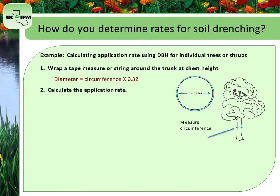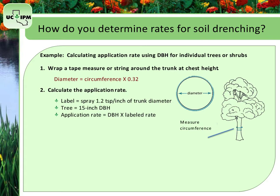For example, if a product label says to apply 1.2 teaspoons of liquid pesticide per inch of trunk diameter and you plan to drench a tree with 15-inch DBH, multiply the DBH by the labeled rate: 15 inches times 1.2 teaspoons per inch equals 18 teaspoons. Convert to liquid ounces by dividing 18 teaspoons by 6 teaspoons per ounce, so you need to apply a total of 3 fluid ounces of the product to the soil surrounding the tree.